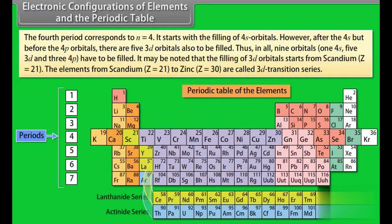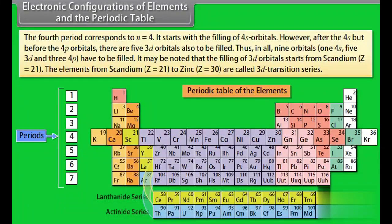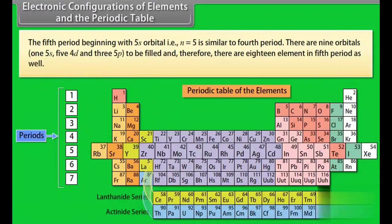The fourth period corresponds to n = 4. It starts with the filling of 4s orbitals. However, after the 4s but before the 4p orbitals, there are 5 3d orbitals also to be filled. Thus in all, 9 orbitals — 1 (4s), 5 (3d), and 3 (4p) — have to be filled. The filling of 3d orbitals starts from scandium (atomic number 21). The elements from scandium (Z=21) to zinc (Z=30) are called the 3d transition series.